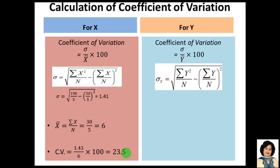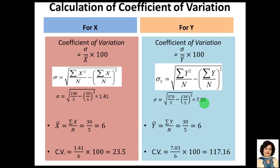For Y, standard deviation is 7.03. The coefficient of variation for Y is standard deviation upon arithmetic mean: 7.03 upon 6 into 100 equals 117.16.